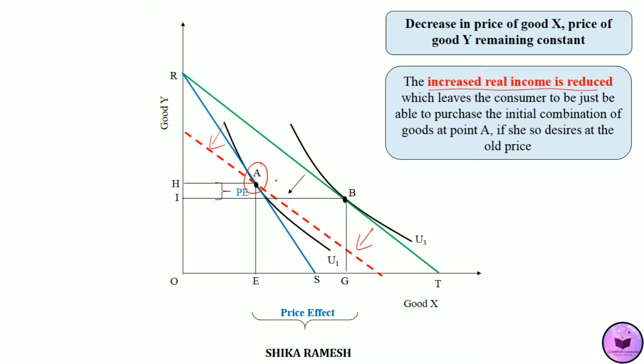This is represented by the red dotted budget line. In this new budget line, the consumer again reaches an equilibrium at point C at U2 utility level, wherein the consumer consumes OF amount of good X and OJ amount of good Y. Out of the additional EG amount of good X purchased due to the price effect, EF amount of good X has been consumed due to substitution effect.